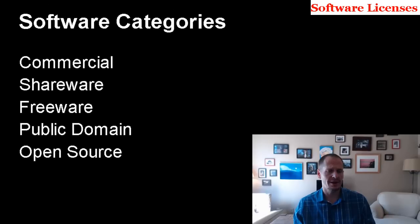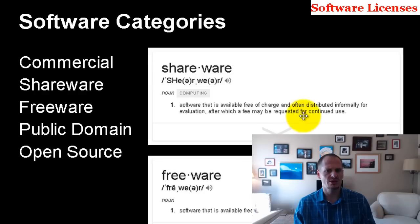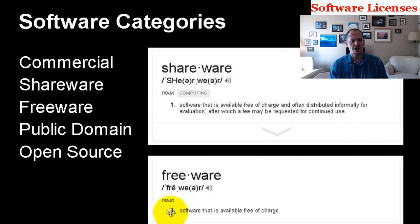Not all software is owned and sold the same way. Commercial software comes with a license agreement — it's being sold for commerce. Shareware is software you can use for a period of time, but a fee may be requested for continued use. Freeware is software available free of charge. Both shareware and freeware are still owned by someone who chooses to share or make it free, and you'll probably still agree to a license agreement when you install them.